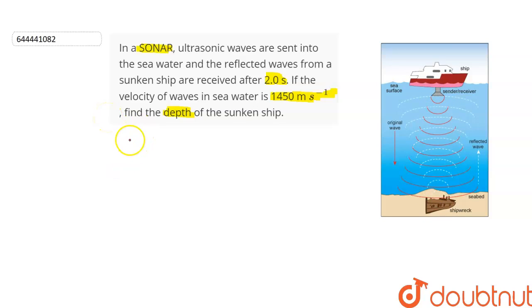Let the distance between the ship and the sunken ship be d. So, we can see that the waves travel a distance of 2d once while going to the bottom of the sea and once while coming back up.